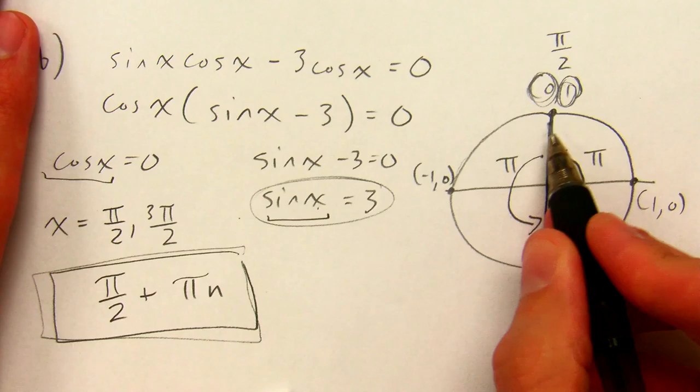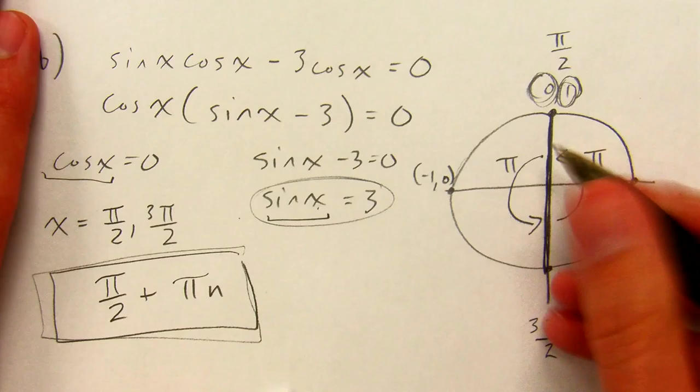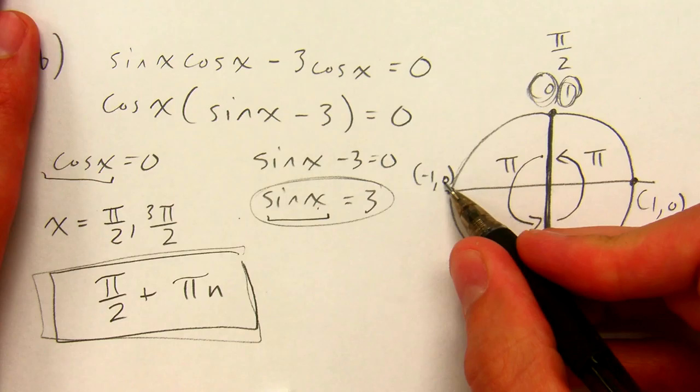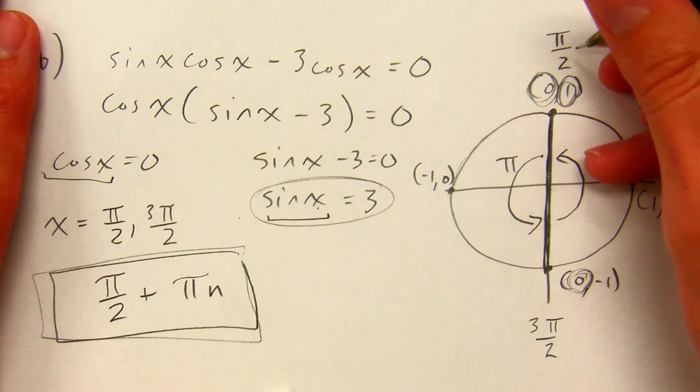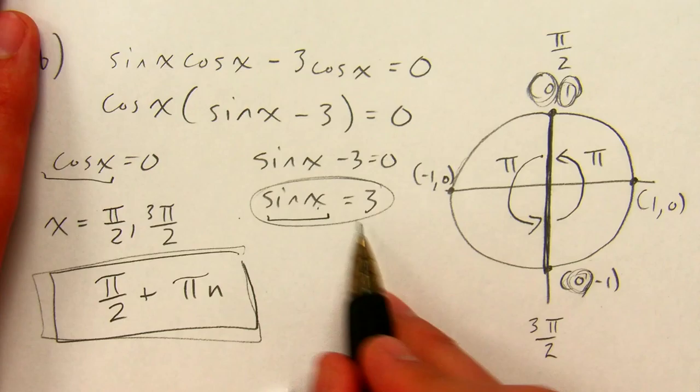And as theta continues to increase, as the angle gets bigger, the angle is continuing to rotate around the circle, the y value is going down to 0. That's even worse. 1 wasn't big enough. I don't want to go back down. How can I get an angle that's all the way up here at 3? I can't. This has no solution.